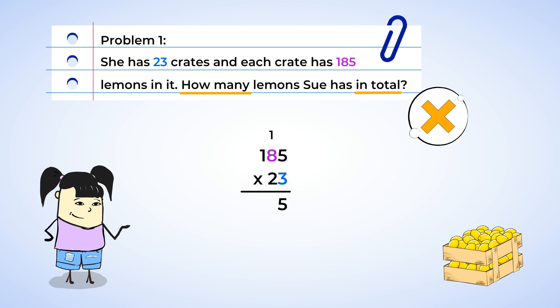3 times 8 is 24, and don't forget to add the 1 to get 25. The 5 stays in the tens place, and the 2 is carried over on top to the hundreds place. And 3 times 1 is 3. Add in the 2 for a final result of 5.